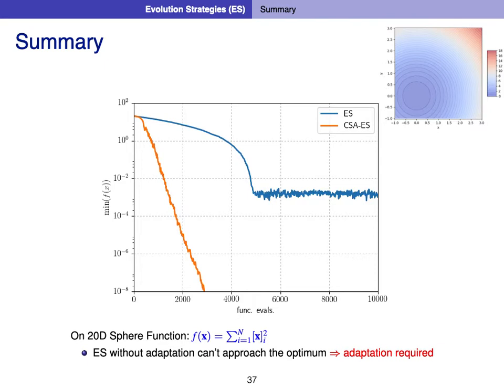To summarize, we have an algorithm which updates the mean vector of the distribution and is invariant to translations and monotonous transformations of the objective function value. A simulation of this algorithm on the 20-dimensional sphere function shows — on the x-axis the number of function evaluations and on the y-axis the best f-value in log scale — that the algorithm only works up to a certain point and then stagnates. What comes next is how to address this stagnation.